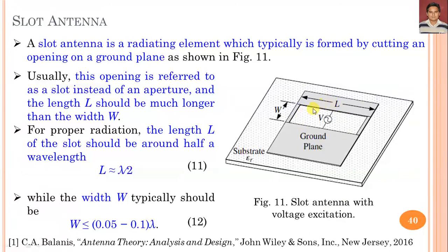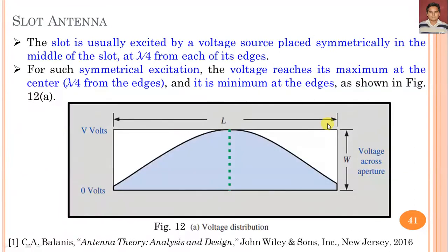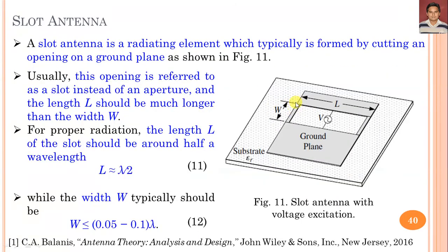This slot antenna is excited with voltage excitation. The slot is usually excited by a voltage source placed symmetrically in the middle of the slot, at lambda by 4 from each of its edges — termed as H1 and H2. So we feed this slot antenna from H1 at a lambda by 4 distance, or H2 at a lambda by 4 distance, providing the voltage source excitation at the midpoint.